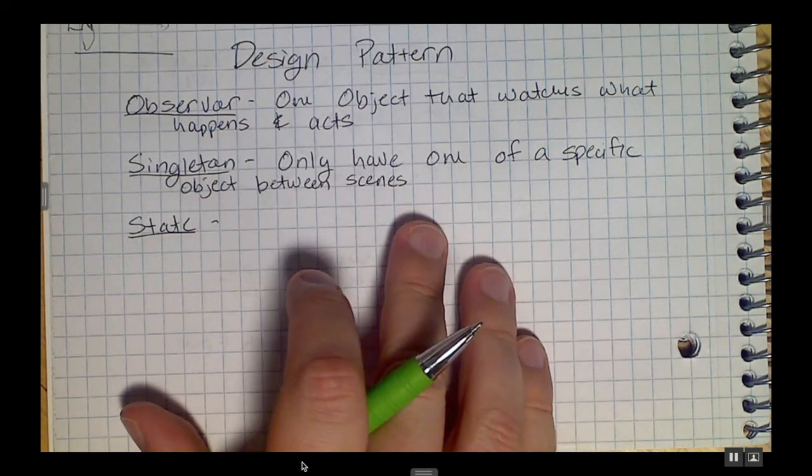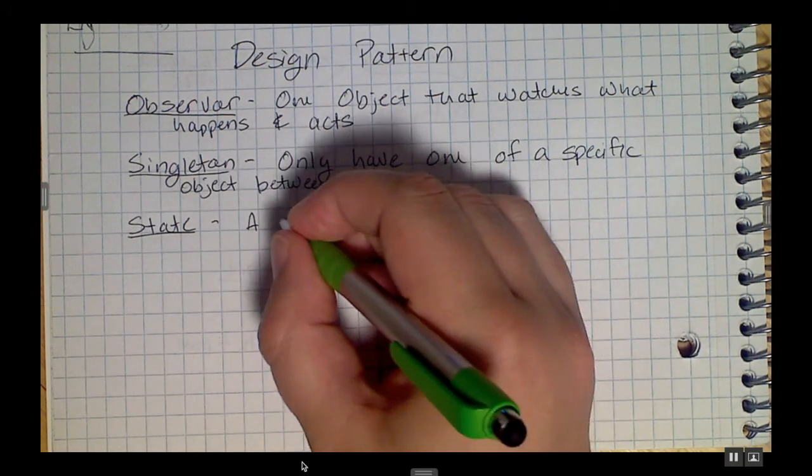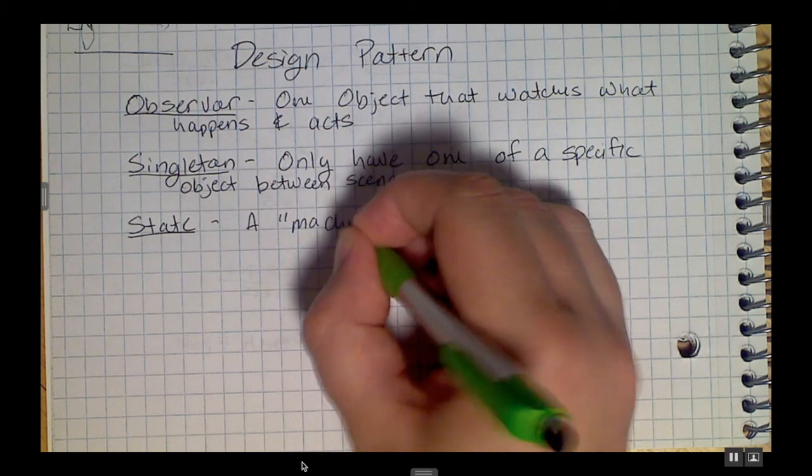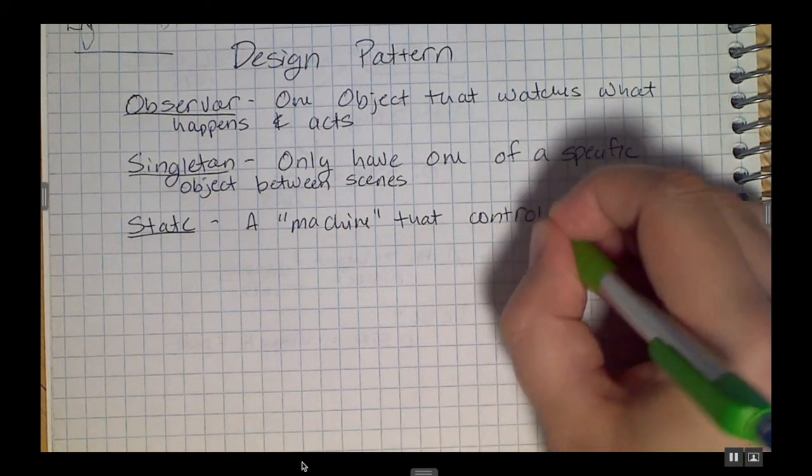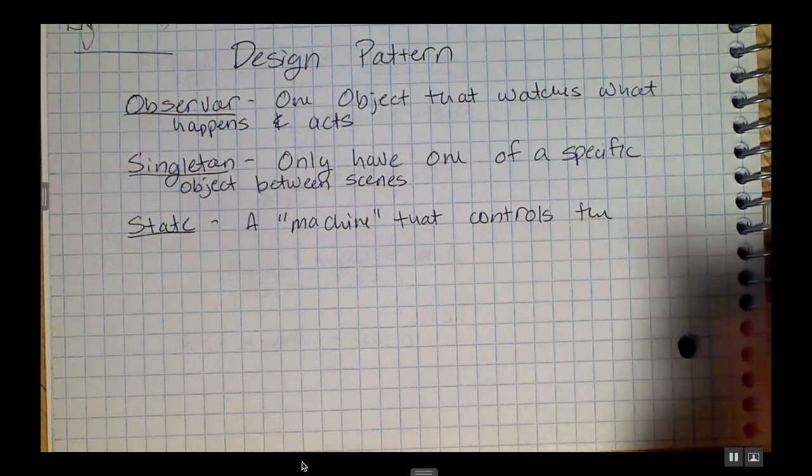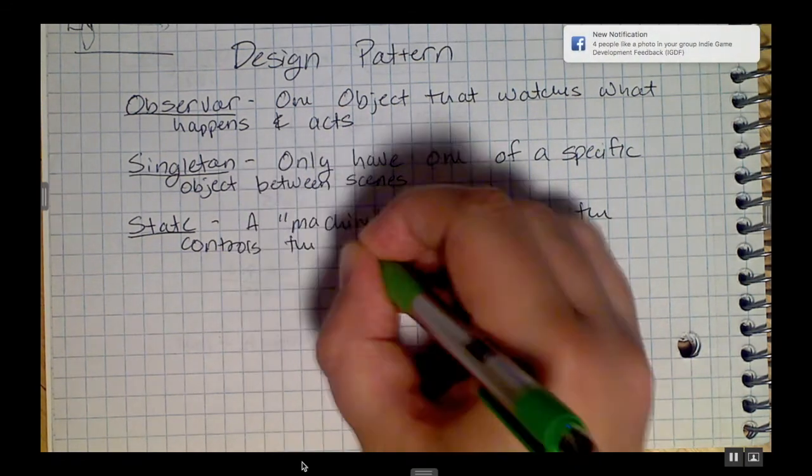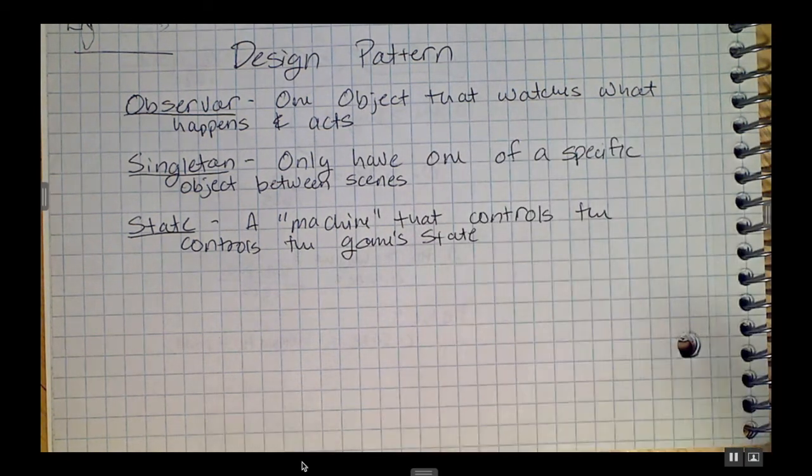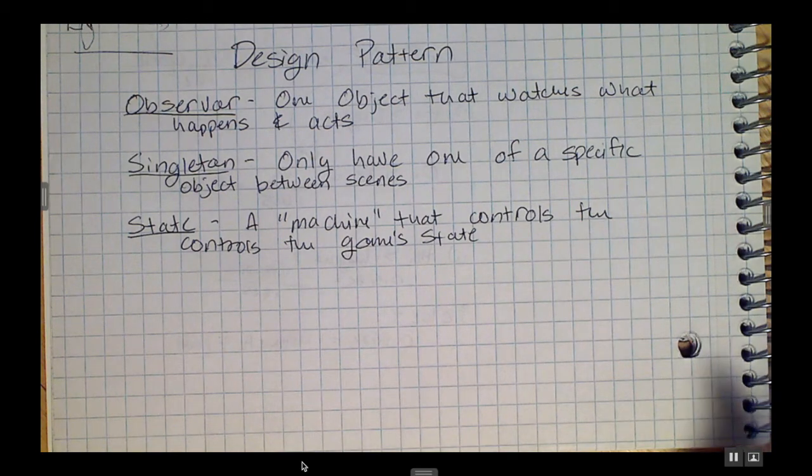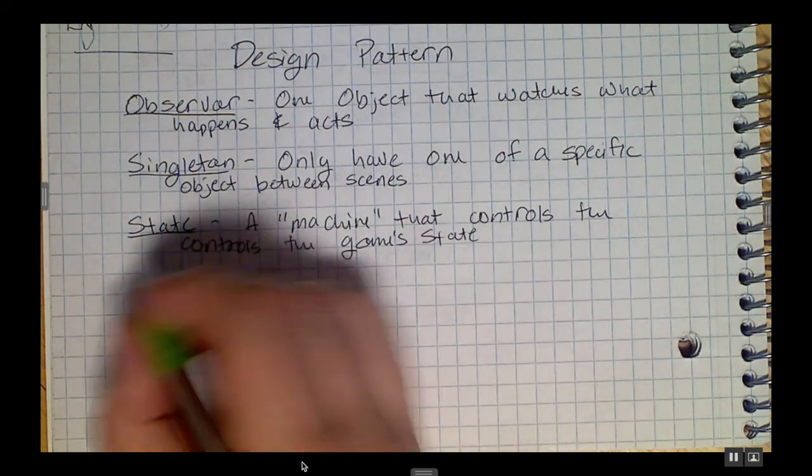The next one that gets used quite a bit is the state pattern. This kind of breaks your gameplay down into discrete chunks. It's often called a machine that controls exactly what state the game is in. This is great for things that are turn-based, that controls the game's state. That's especially helpful for anything that's turn-based or that has discrete states - this is the refill state, this is the move state, and so on.